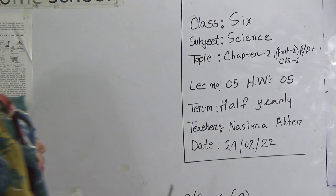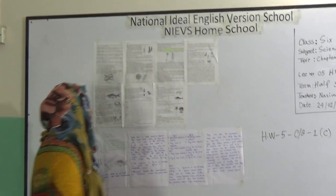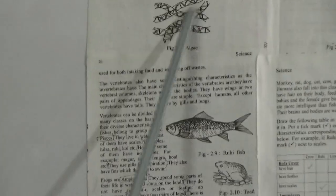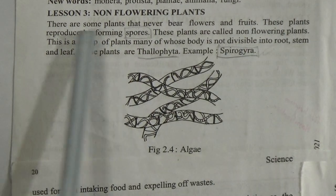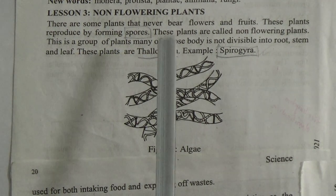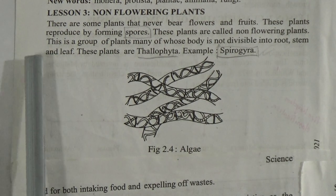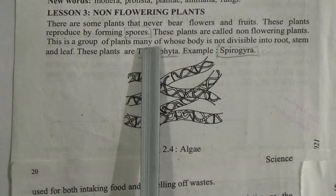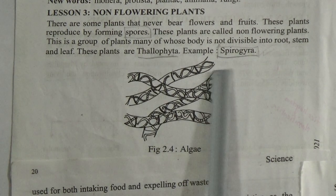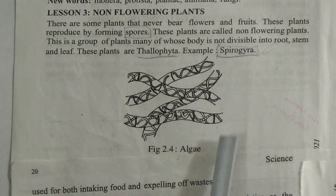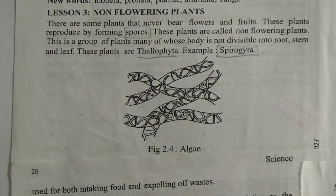Let's begin the class. This is page number 16. We will start from Lesson 3: Non-Flowering Plants. There are some plants that never bear flowers and fruits. These plants reproduce by forming spores and are called non-flowering plants. Many of these plants have a body that is not divisible into root, stem, and leaf. These plants are Thallophyta. Example: Spirogyra, which is one kind of algae. Here is the figure of Spirogyra.